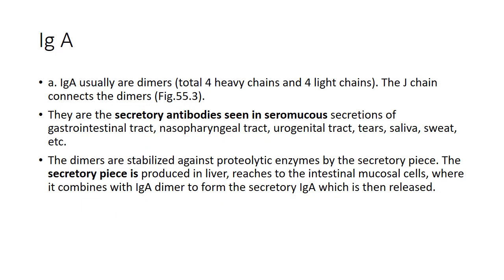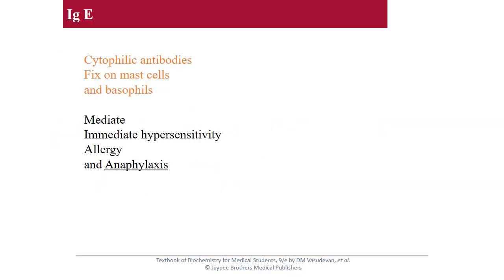Now IgA. IgA are usually dimers — that is, total four chains — and the J chain connects the dimers. They are the secretory antibodies. IgA produced in the liver reaches the intestinal mucosal cells, where it combines with the IgA dimers and is released. IgE are the cytophilic antibodies associated with the mast cells, and they mediate the immediate hypersensitivity reaction, whereas delayed hypersensitivity is carried out by T cells.